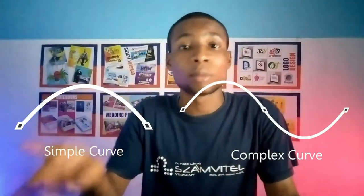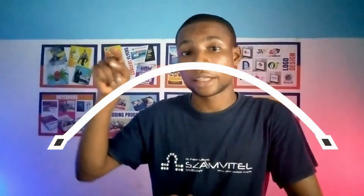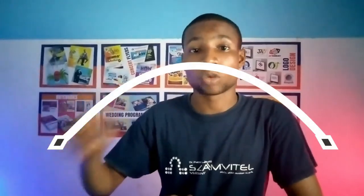The pen tool creates two types of curves: the complex curve and the simple curve. The simple curve is where you create a point, draw a curve, and create another point — forming just one curve. The complex curve is where you create point A, a curve, point B, another curve, and point C — forming more than two points.